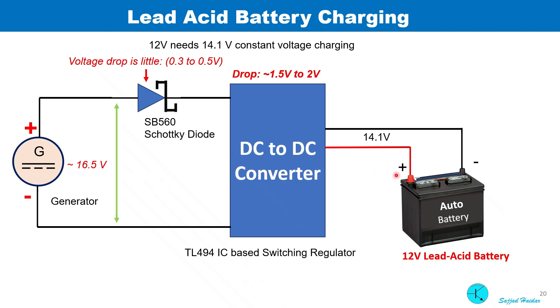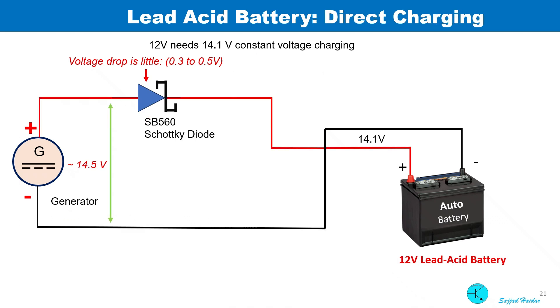Similarly, we can say that to charge a 12-volt lead-acid battery which is commonly used in cars, we need 16.5 volts at the input that should be generated by this hand crank generator. As there will be a drop of 2 volts across the DC to DC converter, to charge a lead-acid battery we can use only a Schottky diode. Then we need 14.5 volts at the generator output. We have to monitor the output voltage of the battery so that it never exceeds 14.1 volts to prevent overcharging.